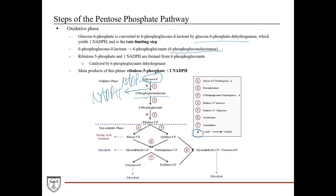Then 6-phosphogluconolactone is converted to 6-phosphogluconate, and then 6-phosphogluconate is converted into ribulose 5-phosphate by the enzyme 6-phosphogluconate dehydrogenase. Importantly, this step also produces an NADPH and produces ribulose 5-phosphate. So the two main products of the oxidative phase are ribulose 5-phosphate, used in nucleic acid synthesis, and two NADPH molecules used in metabolic processes such as fatty acid synthesis.